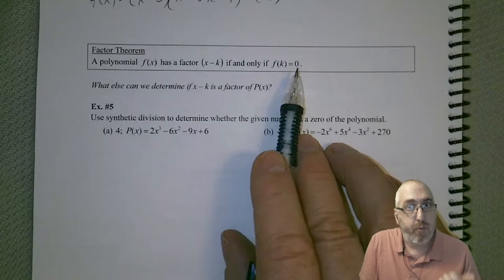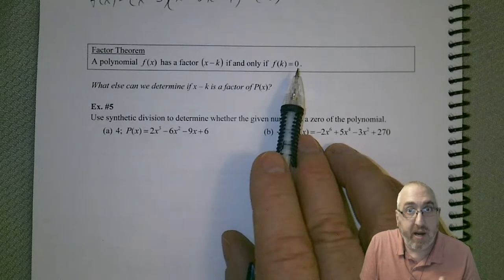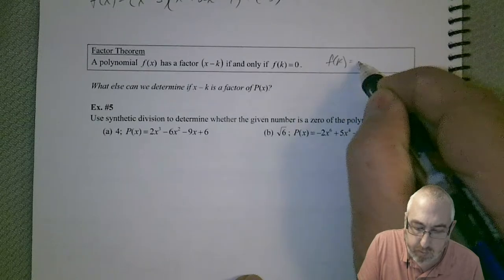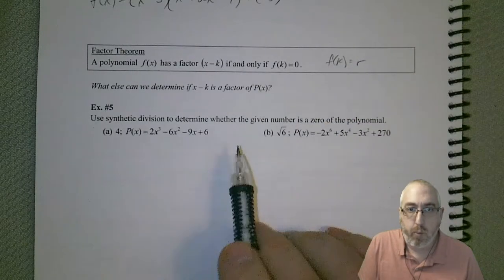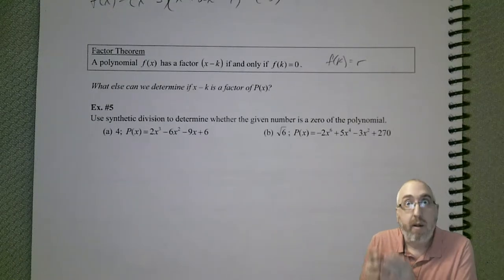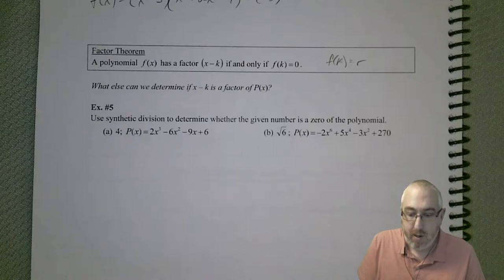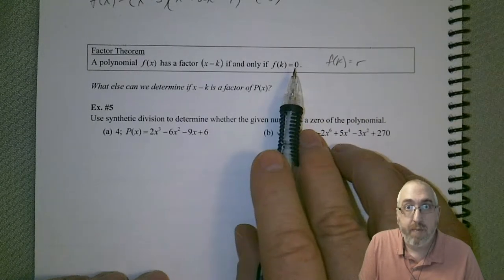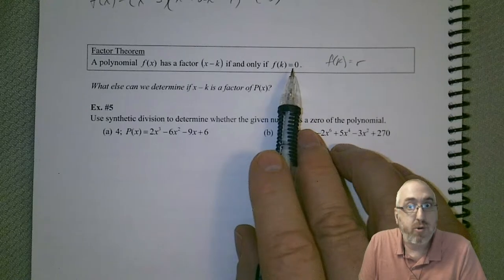Now remember, from the previous theorem, that remainder theorem, that said that f(k) is equal to r. So remember, when we plugged in for synthetic division and whatever we got for remainder, that was the function value. Well, so when that function value is 0, then that also means that the remainder is 0.